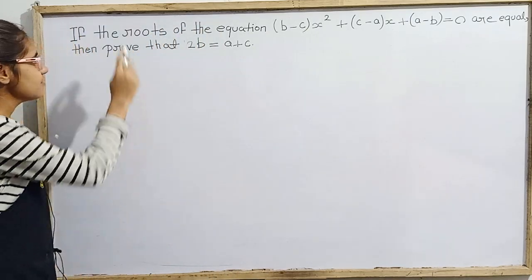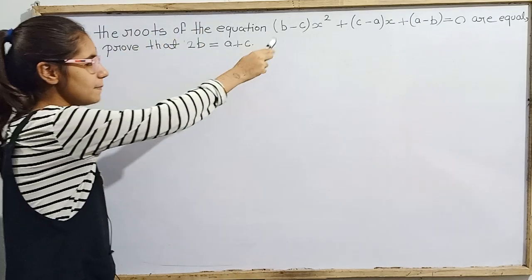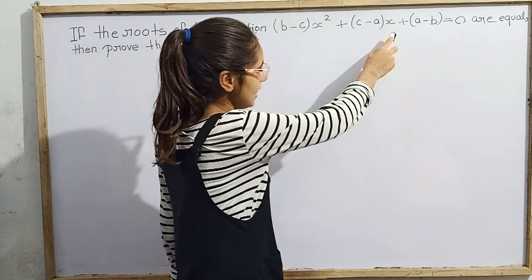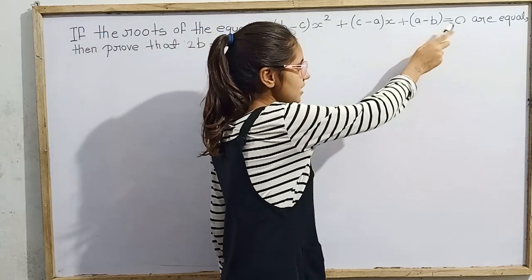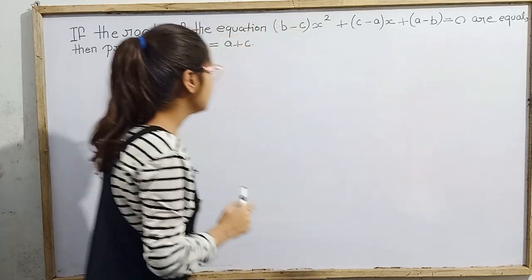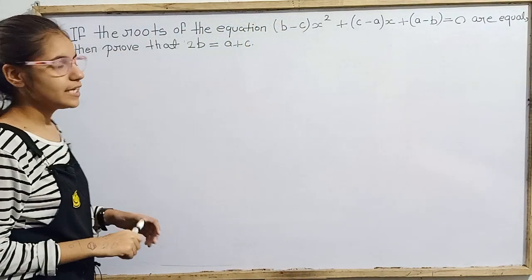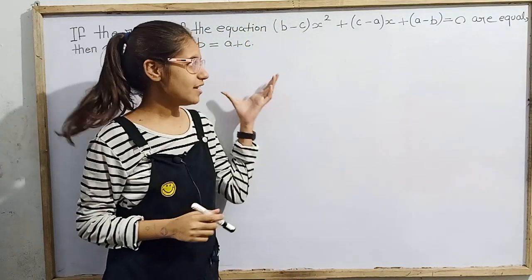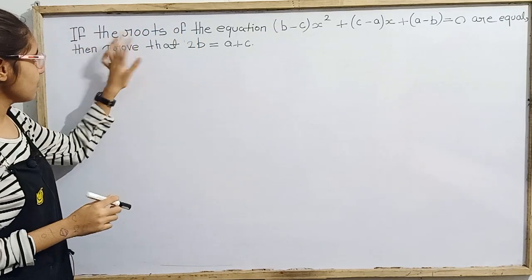So our question is if the roots of the equation b minus c x squared plus c minus a x plus a minus b equal 0 are equal, then prove that 2b equal a plus c. Okay, very interesting question. Let's see.